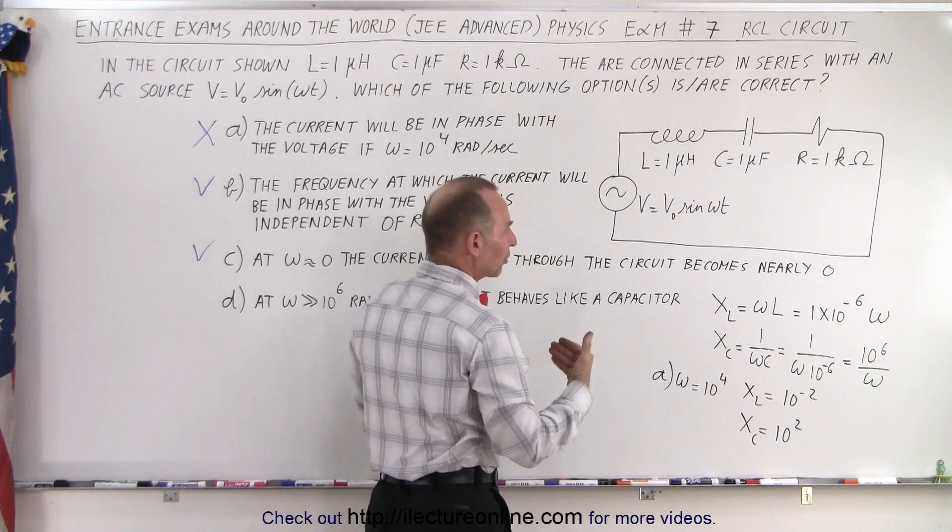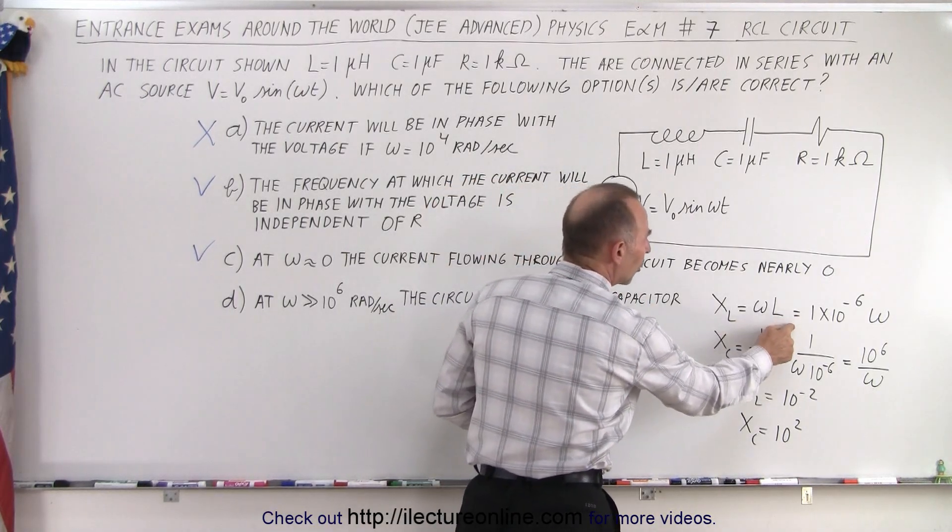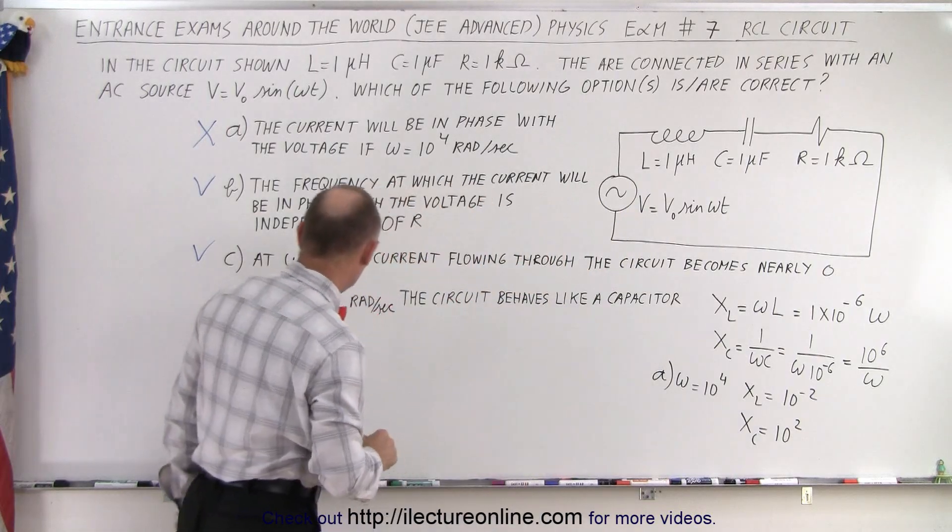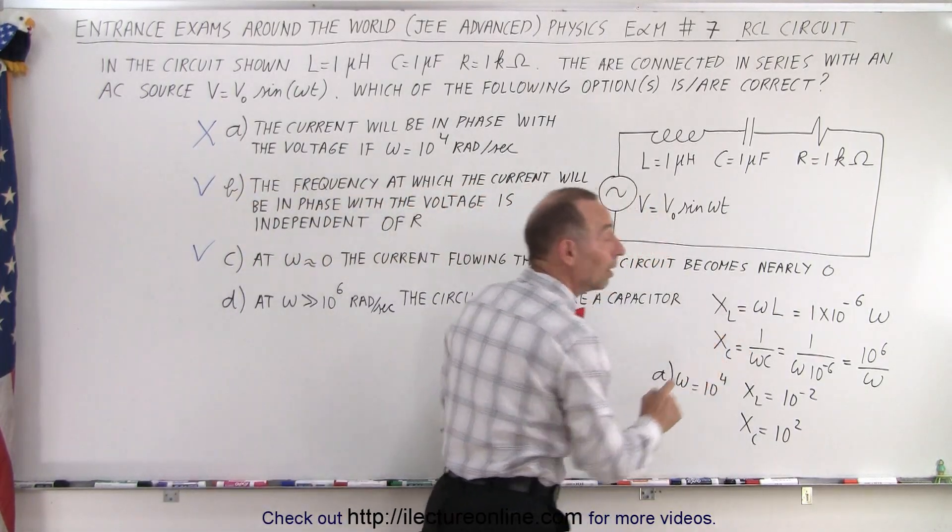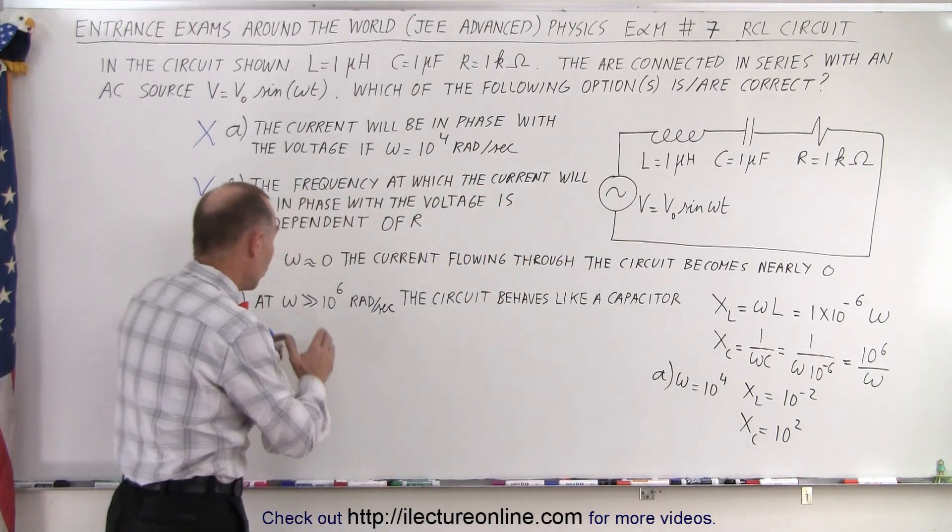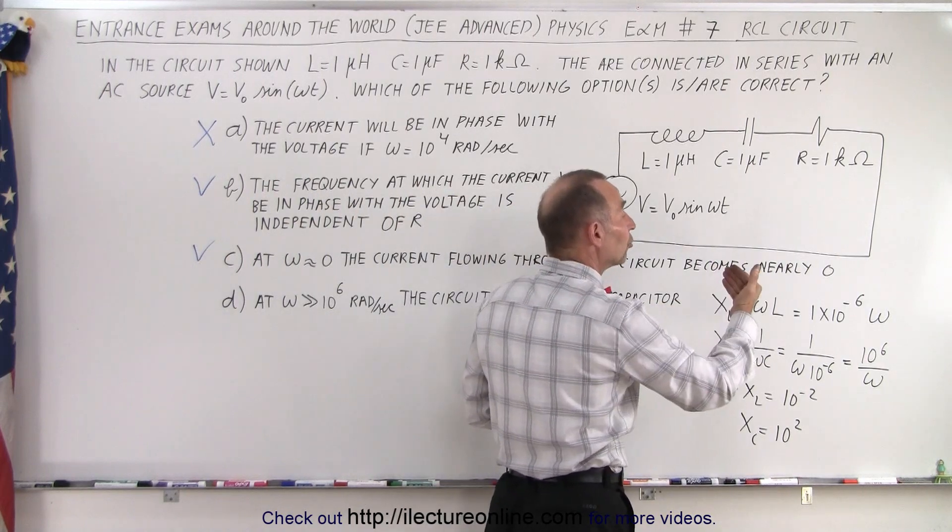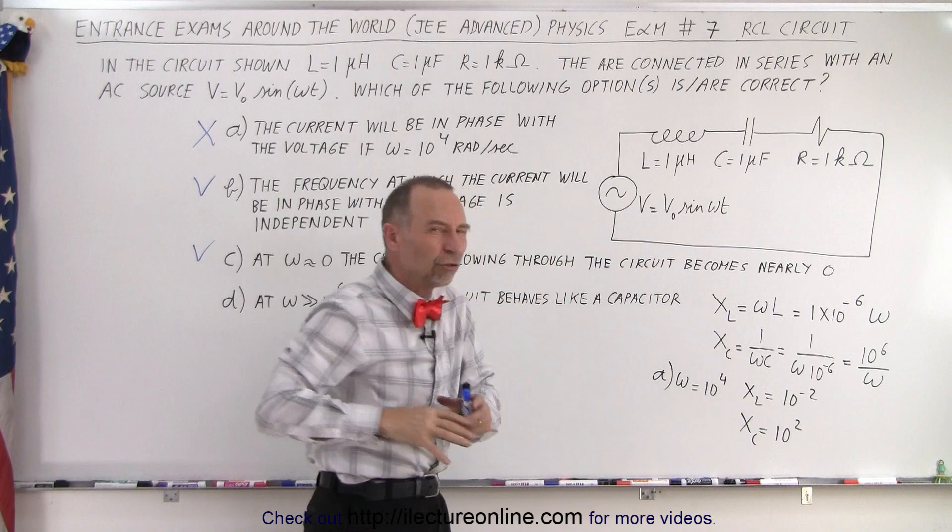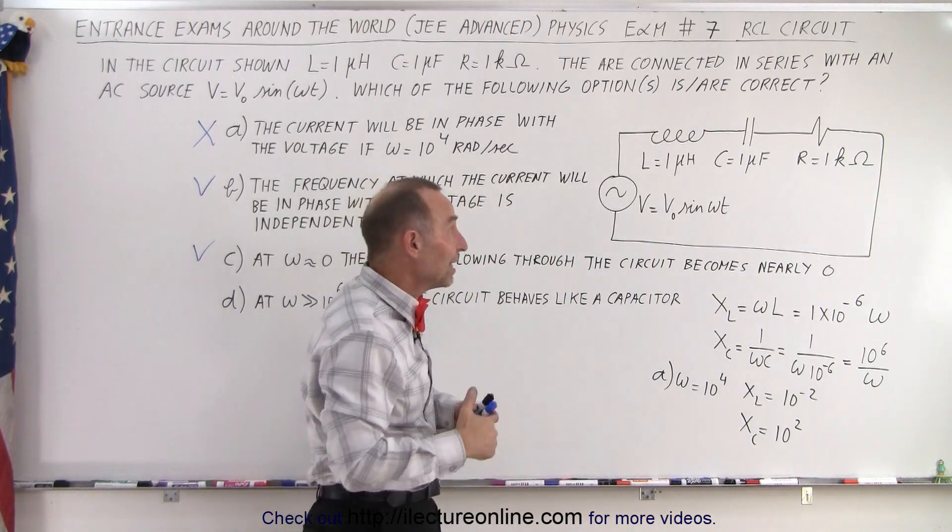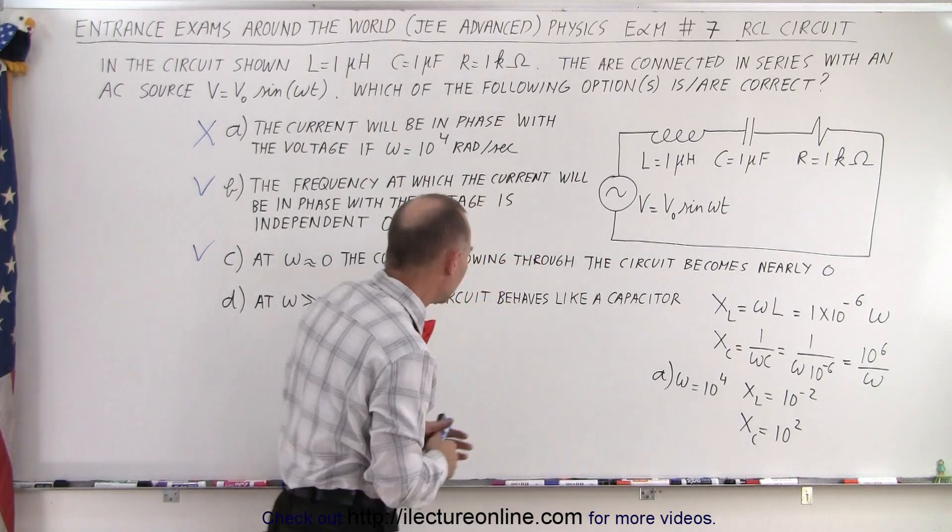Notice that the reactance of the inductor, X_L, becomes large when omega becomes large. When omega equals 10^6, X_L will be 1. But when omega is much larger than 10^6, X_L will grow very large, and therefore very little current will flow through the circuit, which is opposite to what you'd expect with a capacitor in the circuit when omega gets very big.